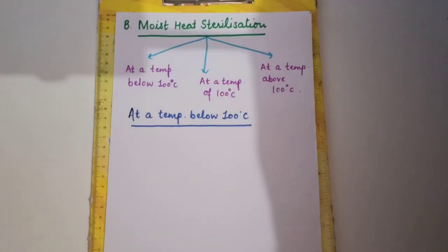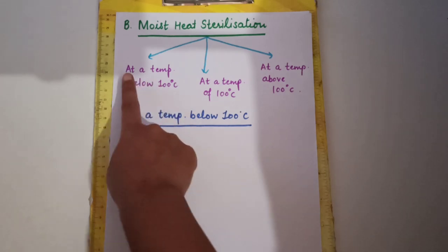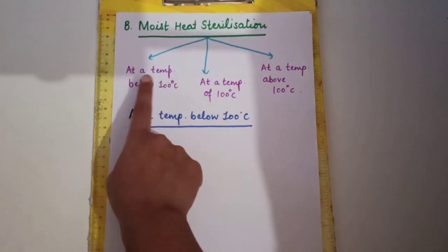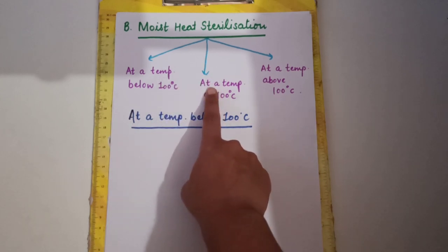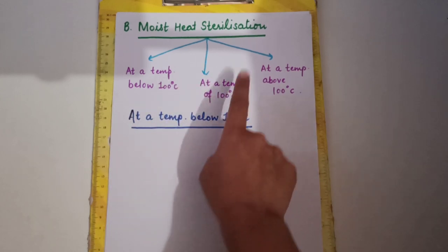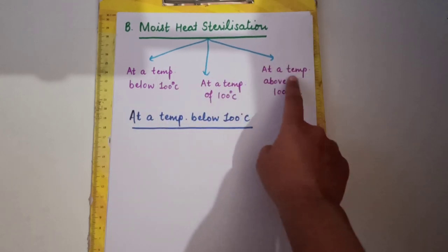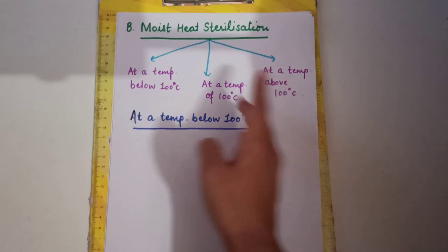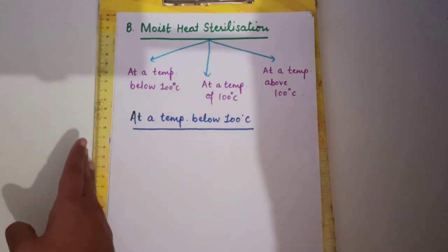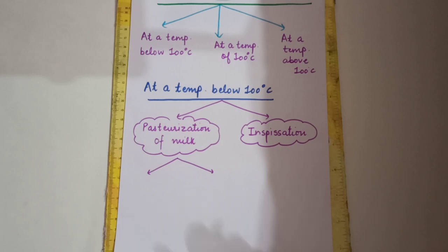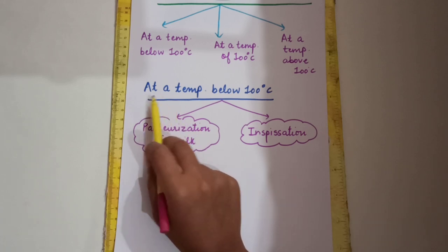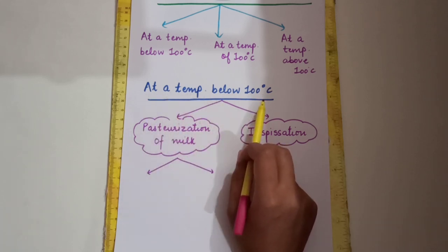Moist heat sterilization has three methods — we can perform it at three temperature ranges: below 100 degrees Celsius, at 100 degrees Celsius, and above 100 degrees Celsius. We have two methods at a temperature below 100 degrees Celsius.